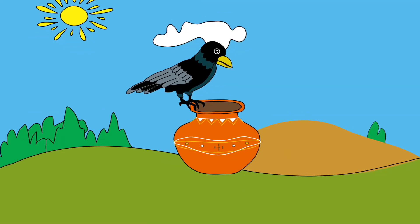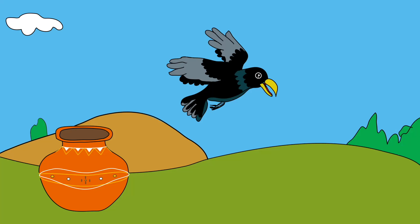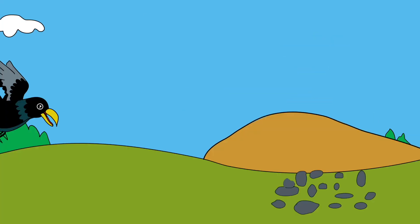With each pebble he dropped, the water level rose a little bit. The clever crow watched with anticipation as the water gradually climbed higher, his determination growing stronger with each successful drop.